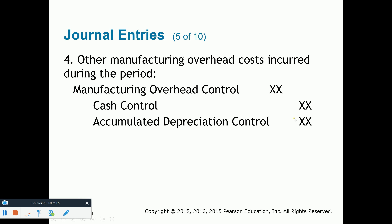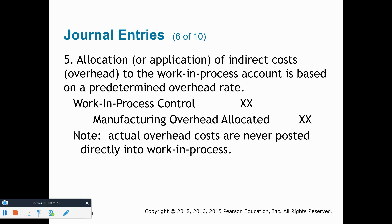The next important step: based on the predetermined overhead rate, we allocate or apply the overhead to the WIP account. Remember, this overhead account was debited for the actual costs. When we apply it to WIP inventory, we credit the overhead account and the debit goes to the WIP account. Then when the assembly line is done, WIP inventory is decreased with a credit and we debit our third and final inventory asset account — finished goods.